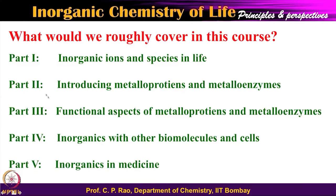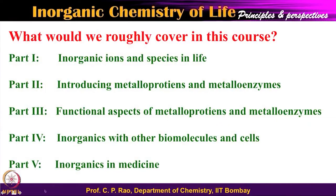Having mentioned that, I said we will try to go through these 5 parts: the initial introduction of inorganic ions and species, then introducing metalloproteins and metalloenzymes — what they do, how diverse they are — and then going into how they are doing it, which is the functional aspects. As I said, this part is mainly covered in biological inorganic chemistry, but I would like to take up a few more aspects in this course — the aspects of inorganics with other biomolecules and cells, and how inorganic ions and species act in medicine.